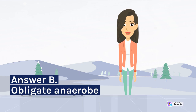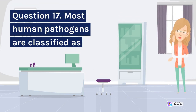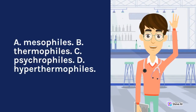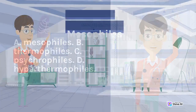Question 17. Most human pathogens are classified as: A. Mesophiles. B. Thermophiles. C. Psychrophiles. D. Hyperthermophiles. Answer: A. Mesophiles.